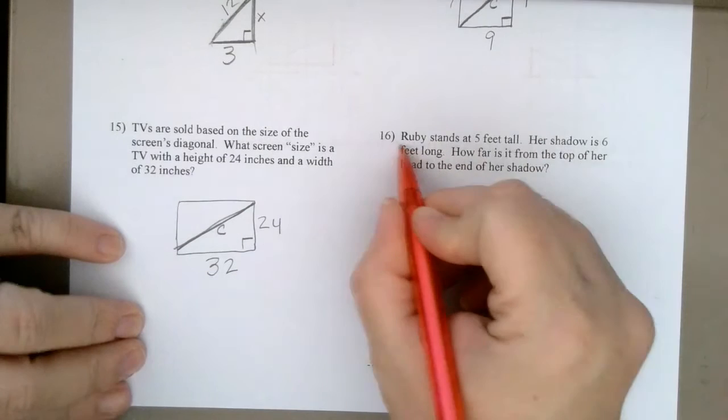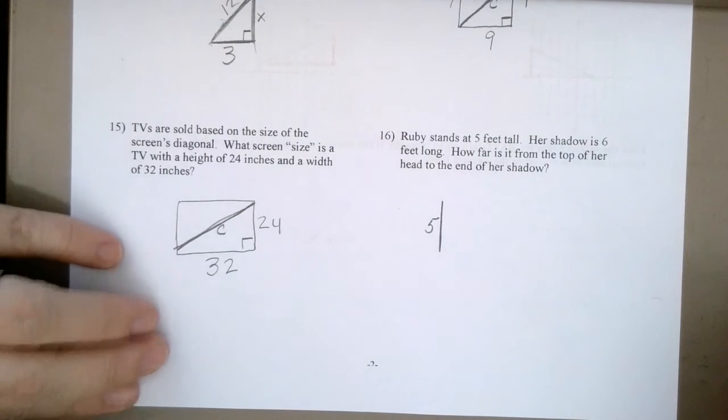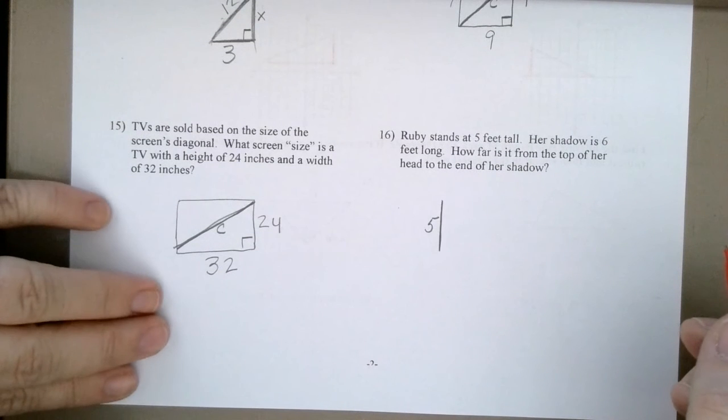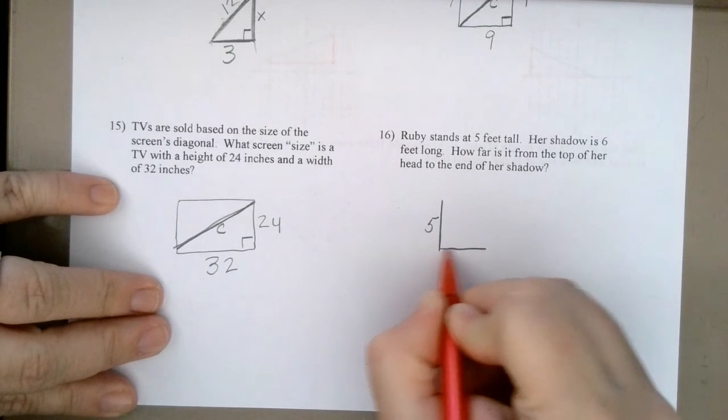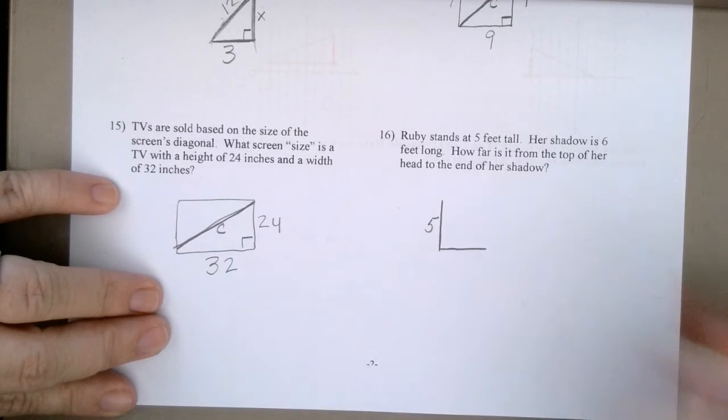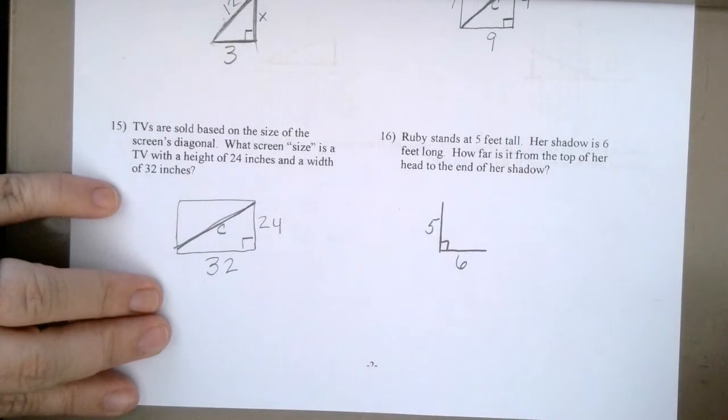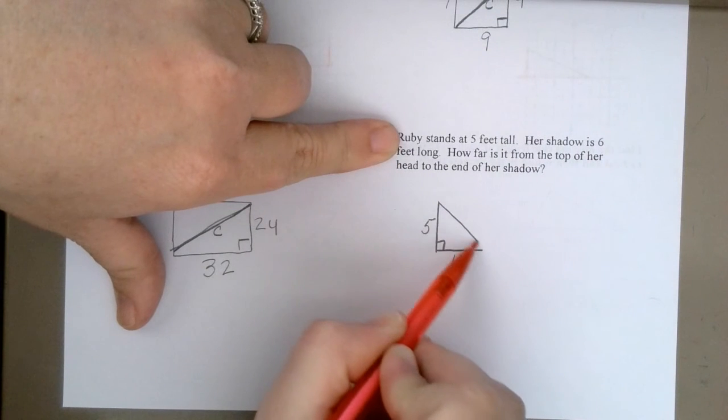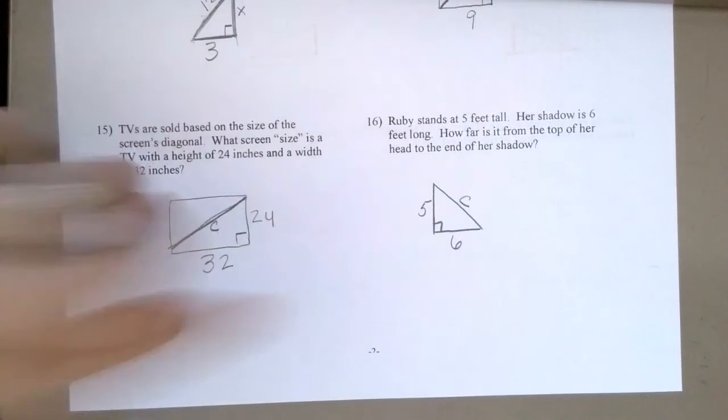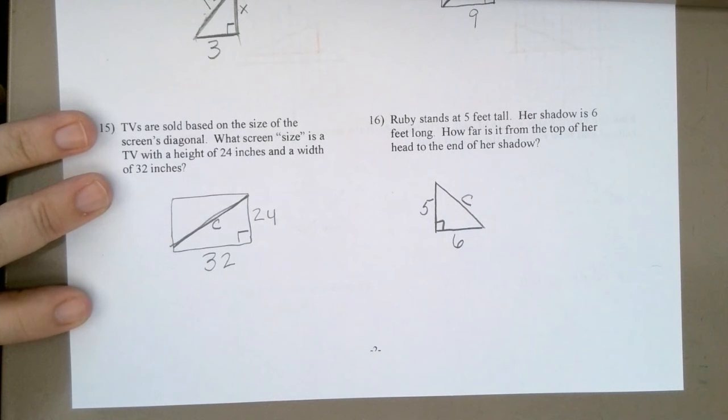Last one. Ruby stands five feet tall. Here's Ruby. She is five feet tall. I know. She's very thin. Her shadow. Where would her shadow be? It would be coming out from her feet, right? Not her head. Her feet. So, her shadow would be here. How long is her shadow? Six feet. That's a right angle because usually people stand perpendicular to the ground, right? How far is it from the top of her head to the end of her shadow? So, again, I'm looking for that hypotenuse. So, once you set them up, you should be able to solve them from there.